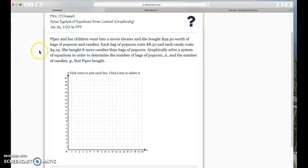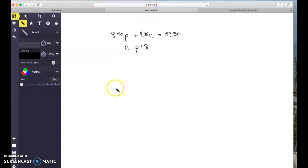It looks like number of bags of popcorn is X, so the popcorn is our X axis and the candies are the Y axis. If I wanted to rewrite this so that I didn't get confused, my candies are my Y axis and my popcorn is my X axis. I have 850 X plus 425 Y equals 59 50.